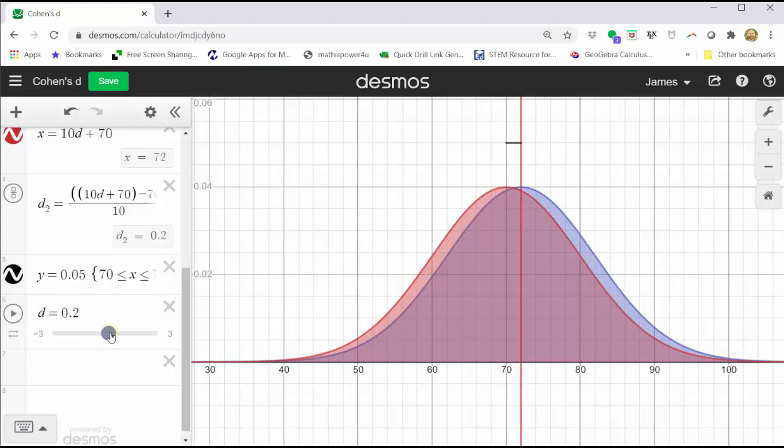Notice how as d increases, the distribution being considered has a larger mean, which we see here where the blue distribution is moving toward the right. Here's a d value of 0.2, which is considered small.